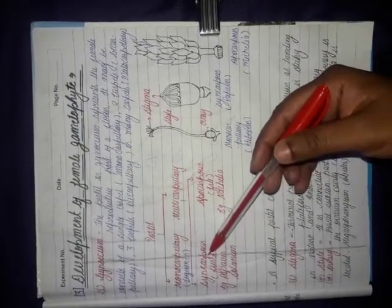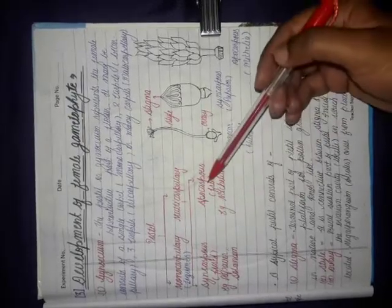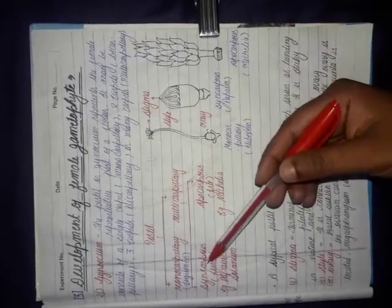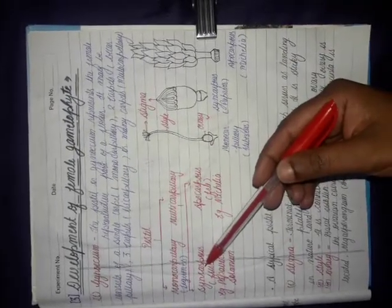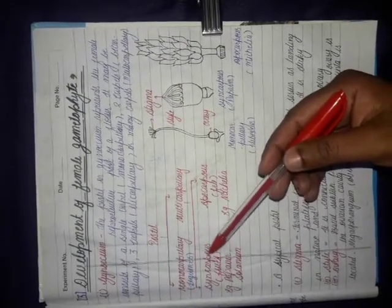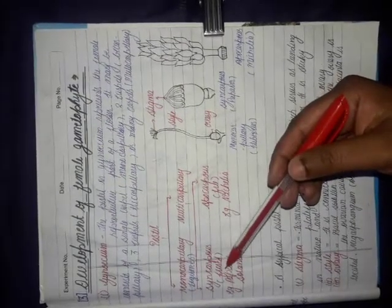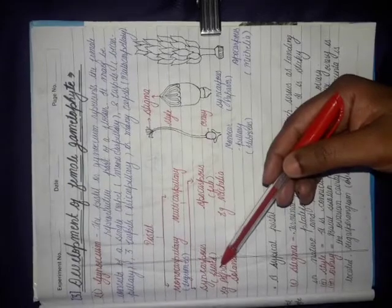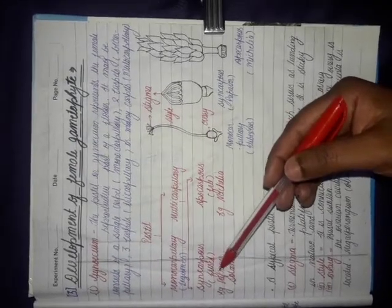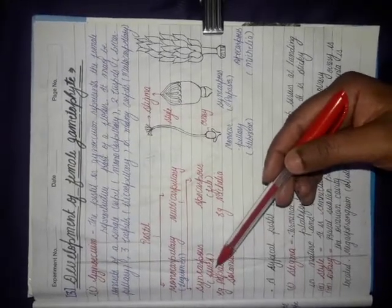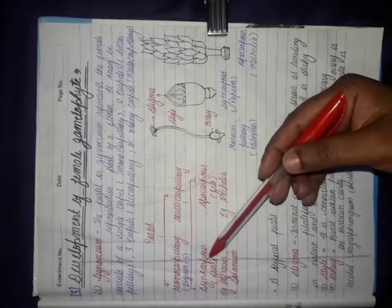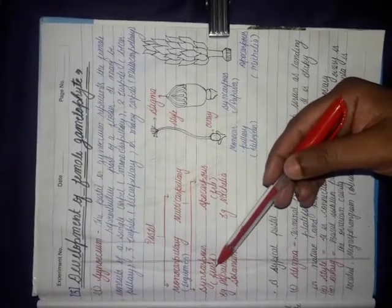The first is the syncarpous condition and the second is the apocarpous condition. The syncarpous condition is when more than one carpels are there and these carpels are fused to each other — they are not separate but fused.